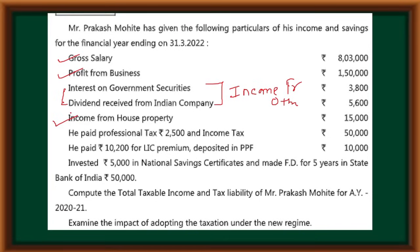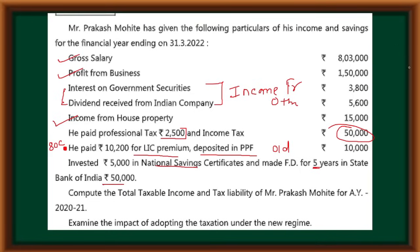Income from salary, income from business, income from other sources — it's 4,000, no problem. He paid professional tax 2,500, income tax 50,000. Then he paid 10,200 LIC premium, deposit in PPF. Under section 80C the time will come — it will be old regime, new regime, we have to ignore it. Then invested 5,000 in NSC certificate, FD tax saving. Compute total taxable income and tax liability for assessment year 2021.